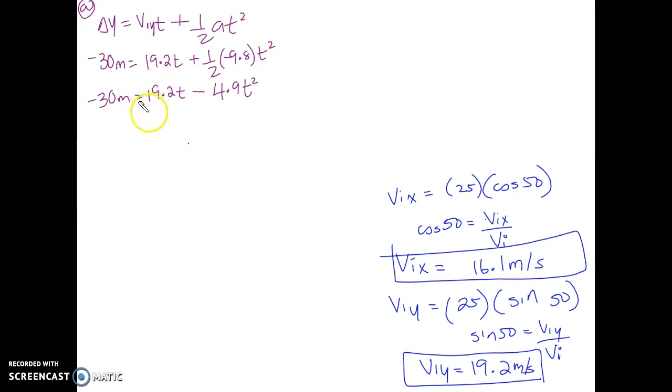Which equals to 19.2t minus 4.9t squared. What do I do next? That's correct, so we're going to put it into the ax squared plus bx plus c format. We're going to write it down: negative 4.9t squared plus 19.2t plus 30 which equals to zero. I brought the 30 over.